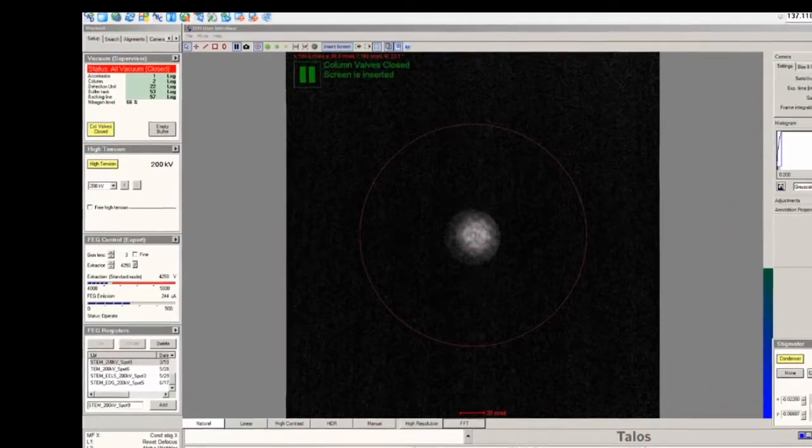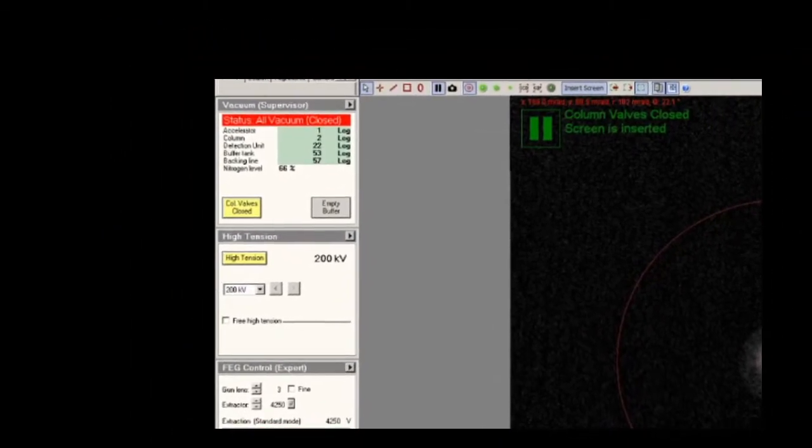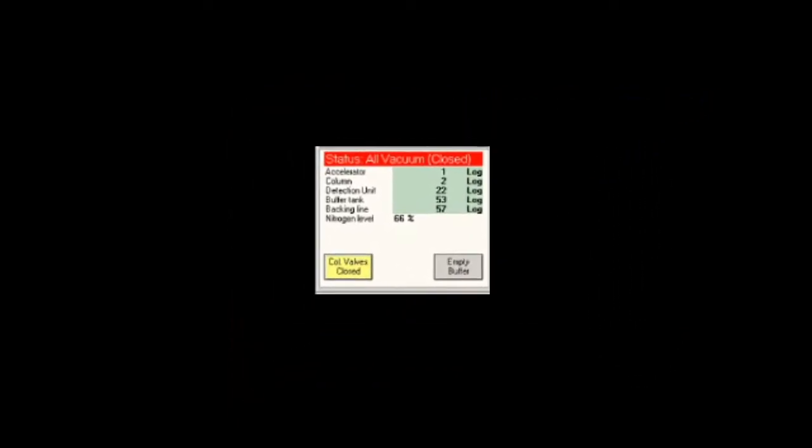When you first arrive at the system you must check the vacuum panel. In particular, check that the column vacuum is less than 15 log. Also ensure that the nitrogen level is greater than 30%. The column valve should also be closed.